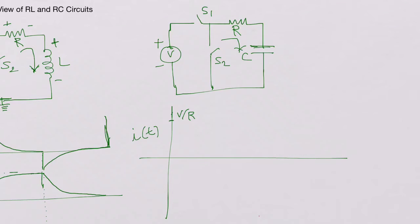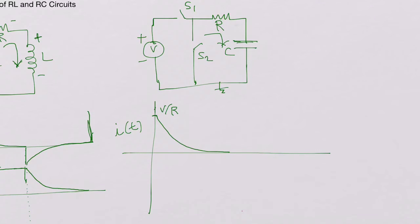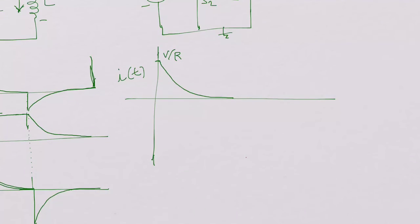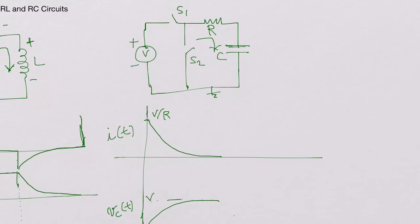Because the capacitor is a short at t=0, there is no voltage drop across it, so the current is V over R. It then charges the capacitor and dies down to zero — in steady state there is no current. This contrasts with the RL circuit, where in steady state there is always a current of V over R flowing. The voltage across the capacitor Vc(t) starts at zero and charges up to V.